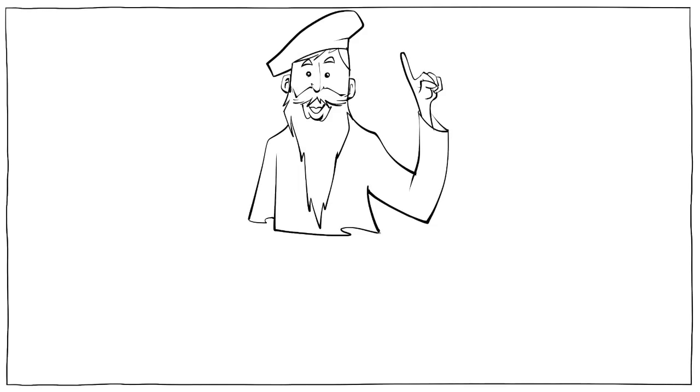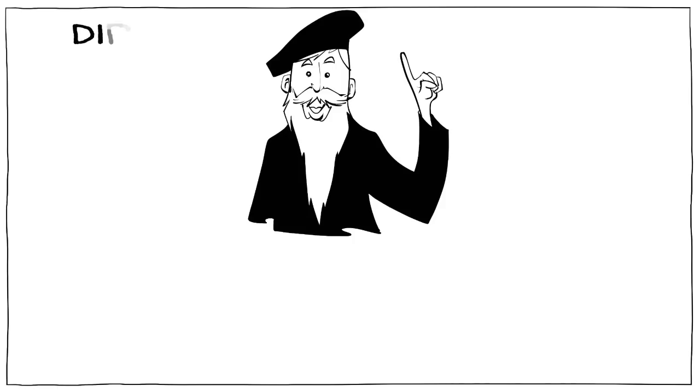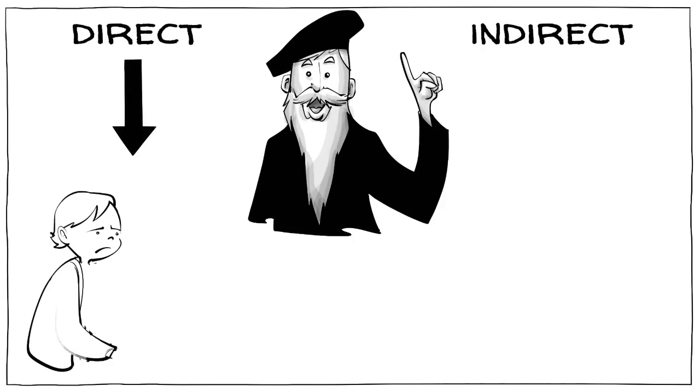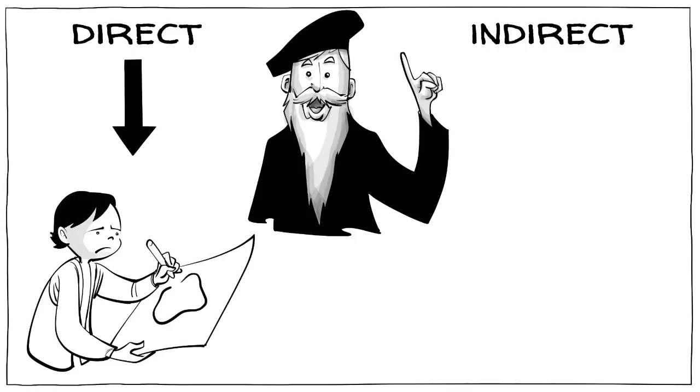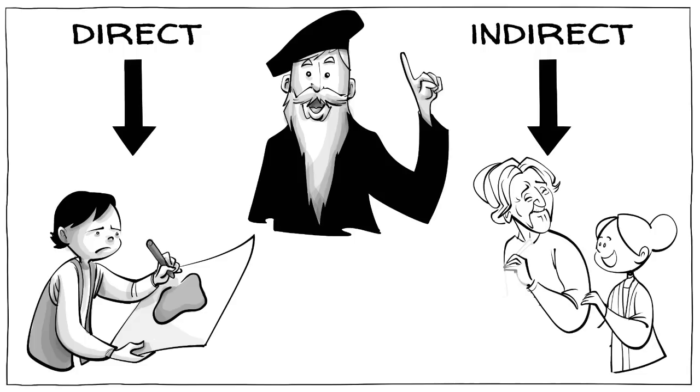Feuerstein then developed his method and began to distinguish two types of learning, direct and indirect. Children who only experience direct learning may never reach their full potential. Kids who also learn indirectly can.